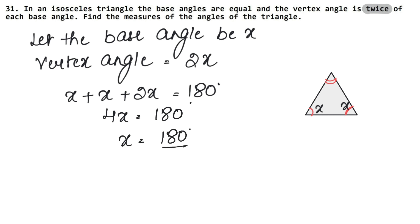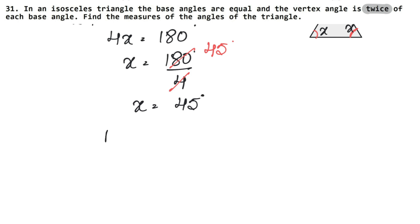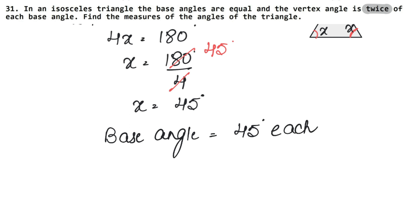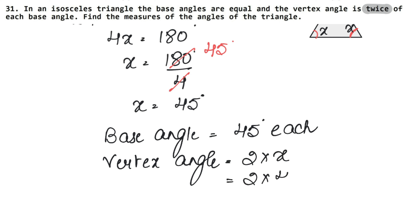So 180 divided by 4 — we cancel, and 4x equals 180, so x equals 45 degrees. And our vertex angle is 2x equals 2 times 45 degrees, which means 90 degrees. So 90 degrees is the answer.